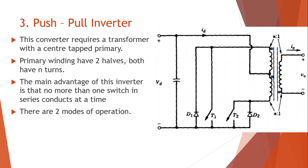In the first mode, you turn on T1. Since T2 is off and D2 is reverse biased, the current comes up and flows through T1. A voltage is induced with plus at the top and minus at the bottom on the primary side. You can see at the dot you have the minus side, so on the secondary side you have minus at the dot and plus on the other end, giving you a positive output voltage.